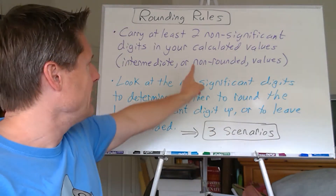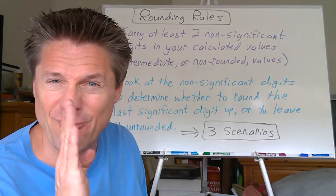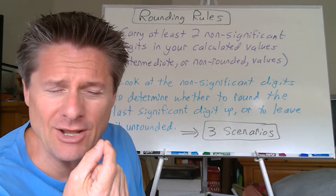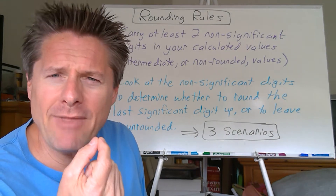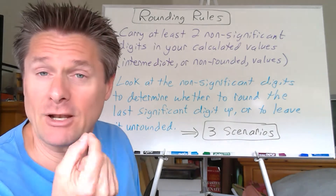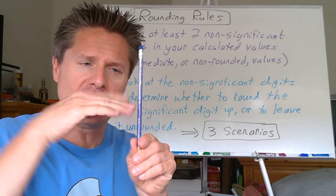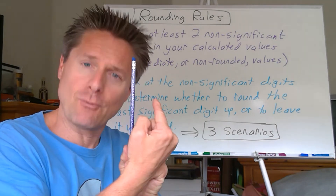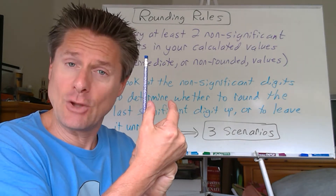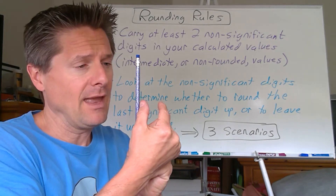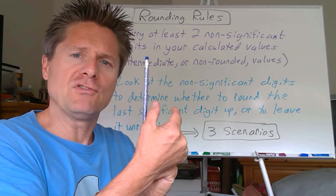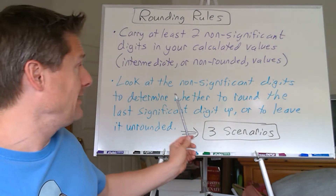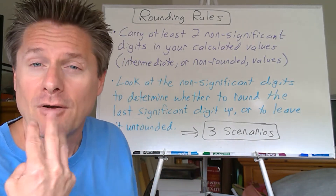What we're going to do is look at that non-rounded or intermediate value — you can see the vertical dash line — and look at that last significant digit and ask: do we round that up or leave it alone? It's based on the non-significant digits. Here's our last significant digit right next to the dash line, and to the right you look at those two or more digits and decide: do they force me to round up or leave it unrounded?